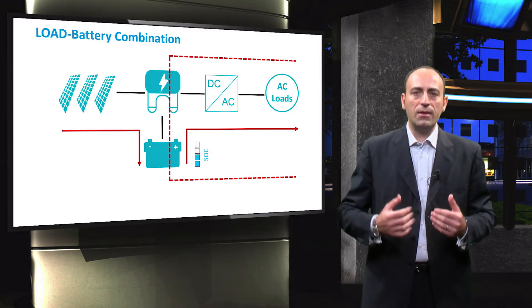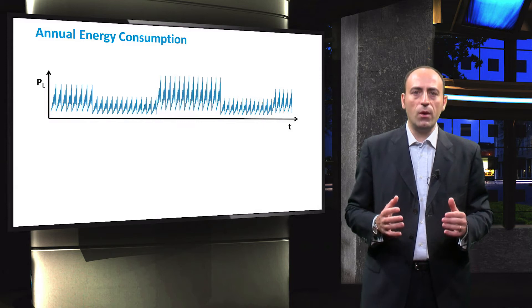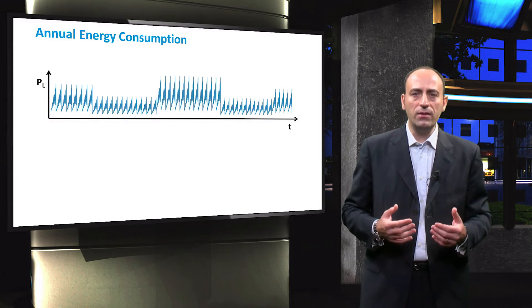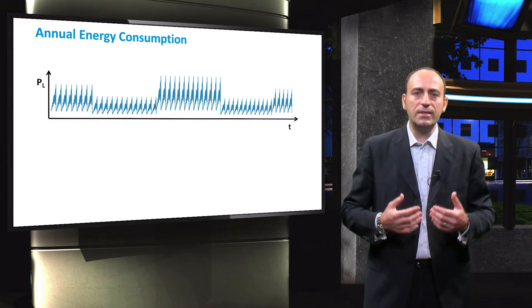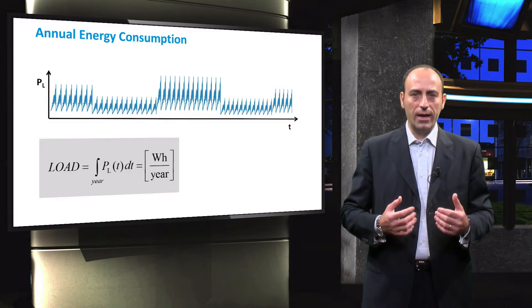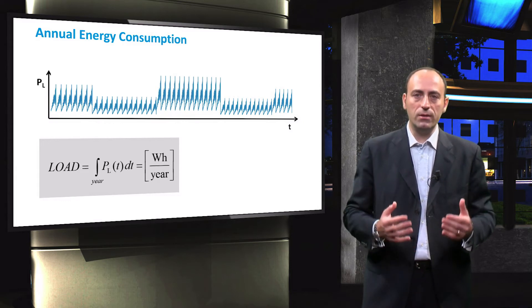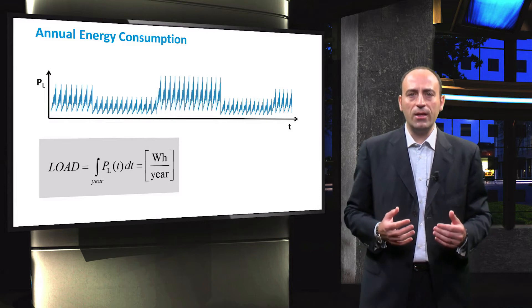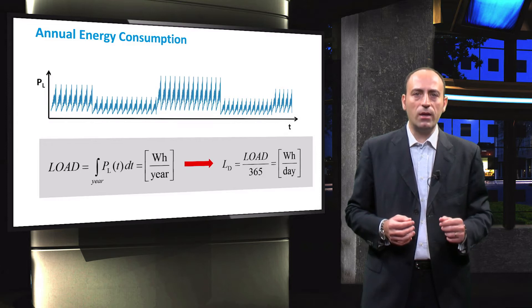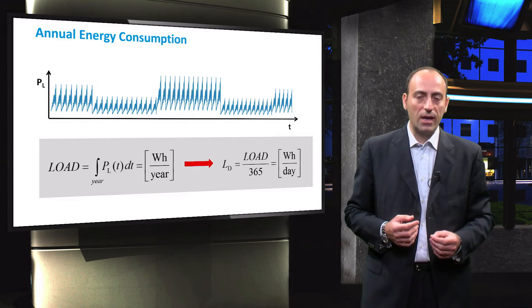First, let us begin with the load-battery bank combination. As with any PV system design, you have to first get the information about the loads used in the system. This is obtained in the form of a load profile, which provides the instantaneous power consumed by the loads and subsequently their annual total energy demand. To calculate the size of the battery bank, the average daily demand of the loads is determined.